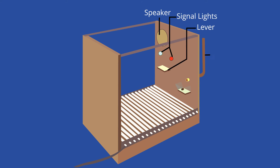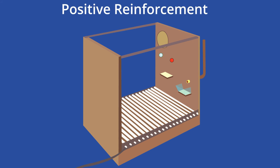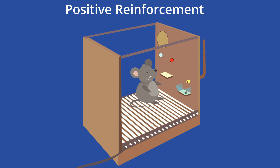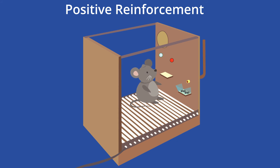In each of these boxes, Skinner had installed either a tiny lever, if it was meant to house a rat, or a small button if it was meant to house a pigeon. In some experiments, Skinner rigged the lever or button to trigger a nearby food dispenser to deliver a pellet to the animal through an opening in the wall. Immediately after each animal was placed inside its box, the critter would run around exploring its new home and eventually bump against the lever or button, accidentally triggering the release of a food pellet.